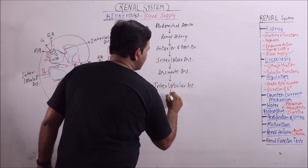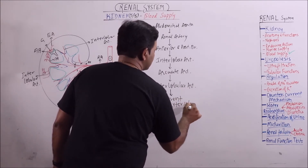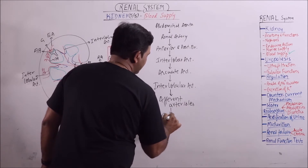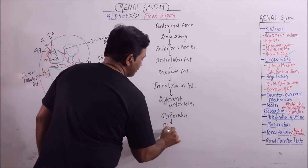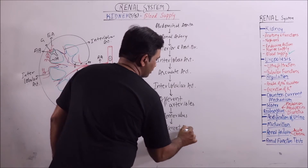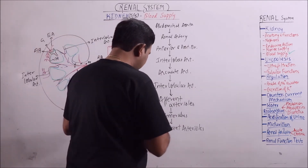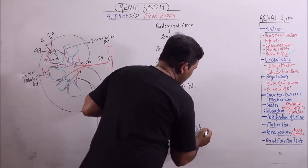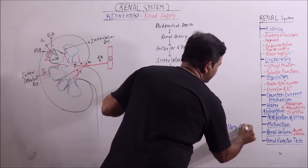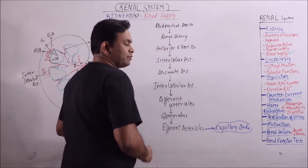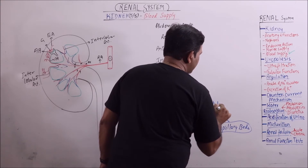So interlobular arteries give rise to afferent arterioles. The bunch of capillaries — the glomerulus — is formed, which will reunite to form efferent arterioles. After that, these efferent arterioles will form capillary beds.